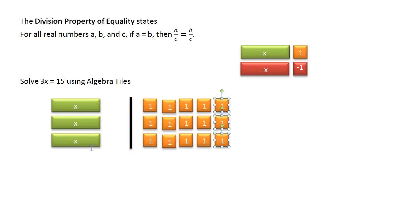So if 3x equals a total of 15 tiles, that must mean that every single 1x has to be equal to 5 tiles. So x equals 5.